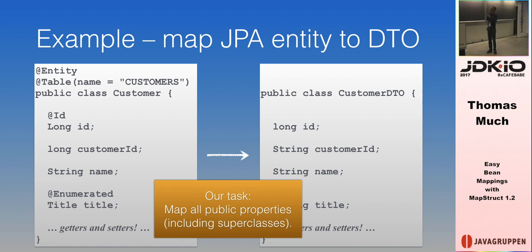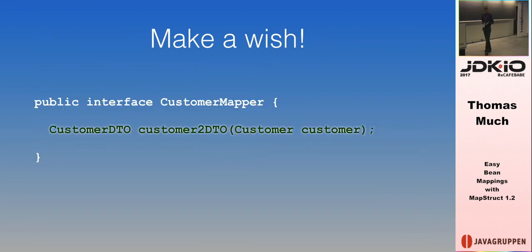Let's look again at our example: the Customer JPA entity on the left, the CustomerDTO on the right. We want to create a unidirectional mapping from the JPA entity to the DTO, mapping all properties including super classes. Our task is to map them — so make a wish. We just write an interface called CustomerMapper — it's common to name it after the base entity plus 'Mapper' — and write a method signature: take a Customer entity and return a CustomerDTO. Give it any name, and that's it.